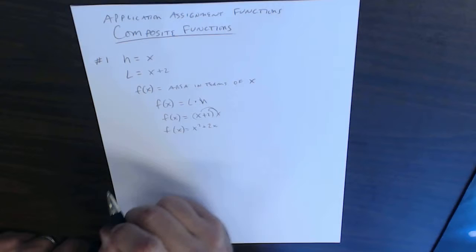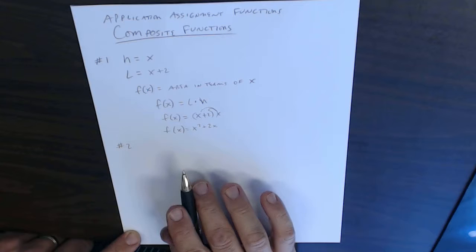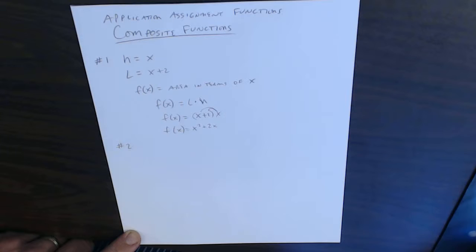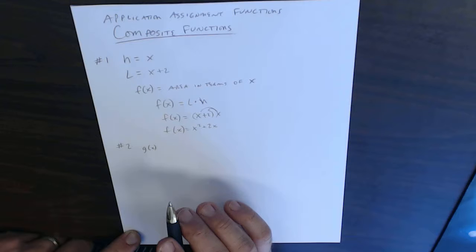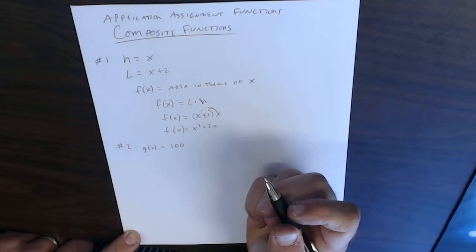Problem number 2, I want you to go through and do problem number 2. Problem number 2 says we have g of x and g of x represents 100, we pay 100 dollars per mural plus an additional 40 dollars per square foot. So we pay our $100 fee, and then we're paying $40 per square foot.